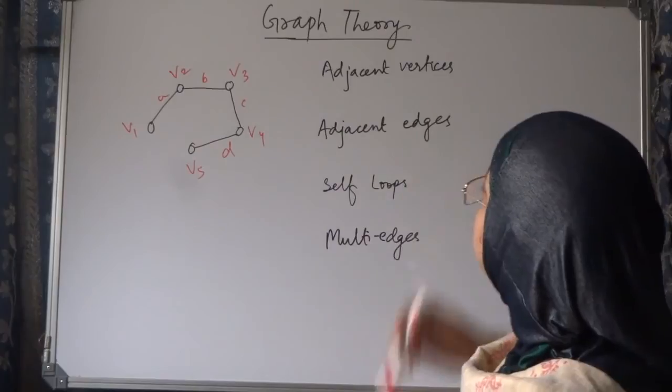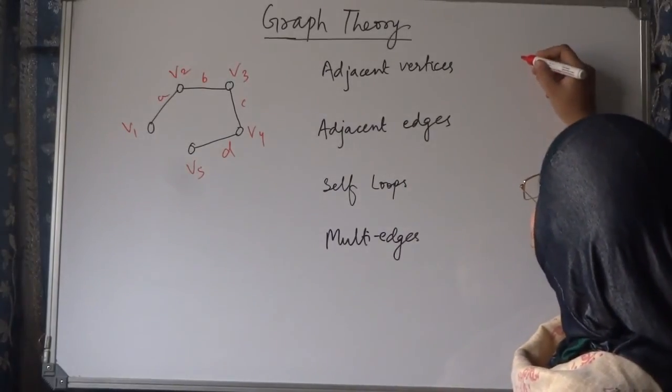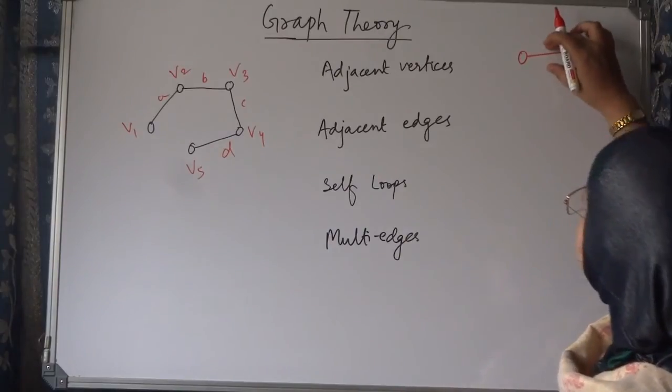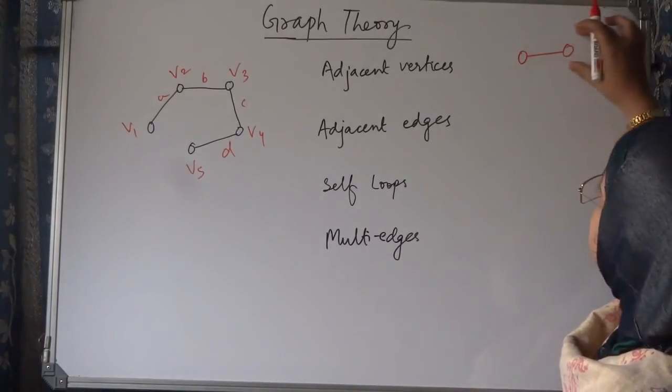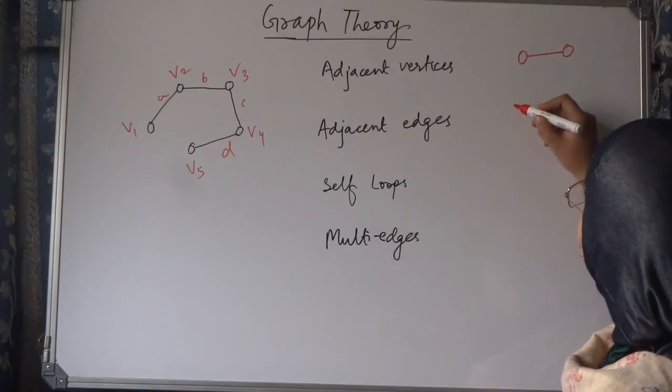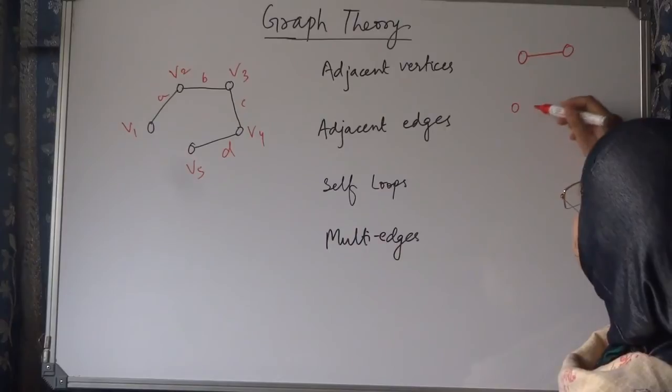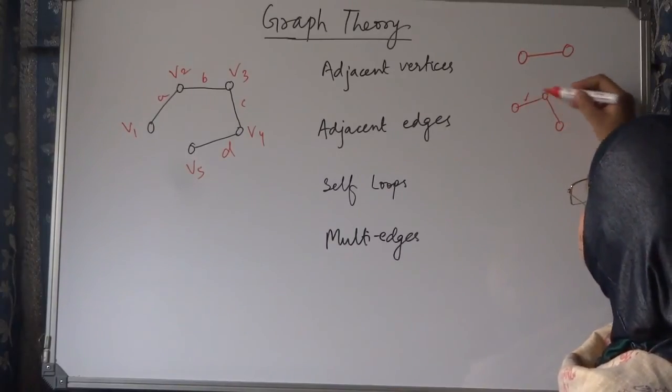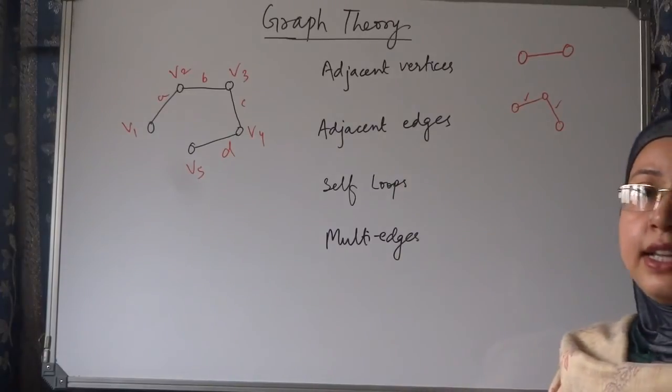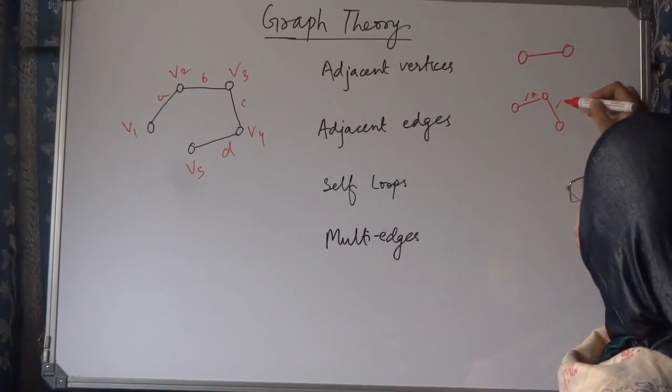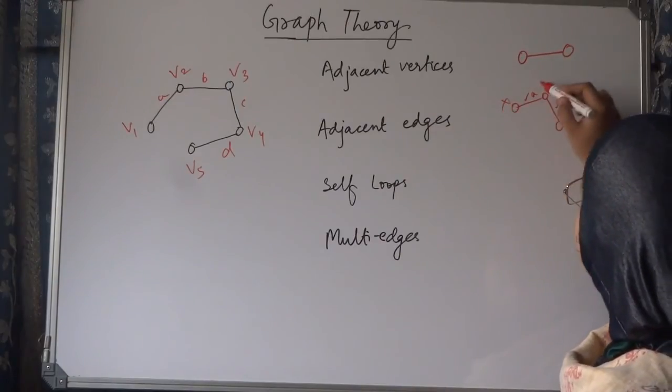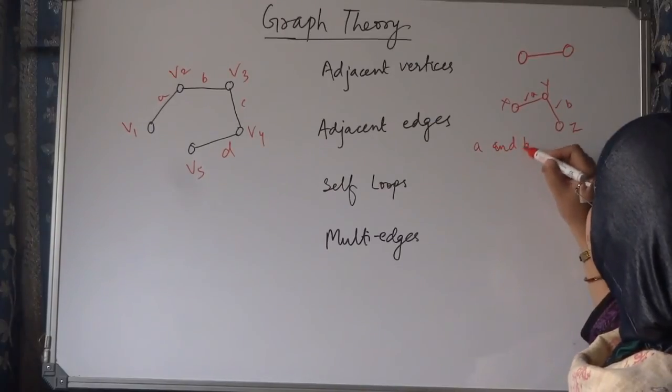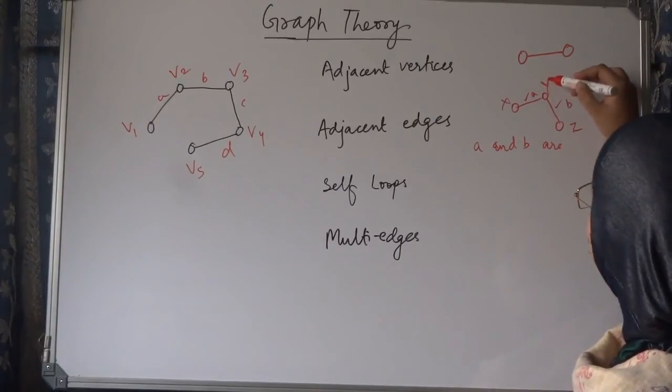And adjacent edges are—let's take one example again here. This edge is common between these two vertices and adjacent edges. These and these are called adjacent edges. Here, suppose this is a and v, and this is x, y, z. So, a and v are adjacent edges for node y.